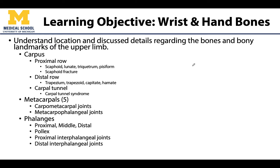We will start with the carpus or the carpal bones, associated with the wrist — we're going to have eight bones there. We will then move to the metacarpals and finish with the phalanges, the distal-most bones of the upper limb. I will have separate videos for the larger joints of the upper limb, but I will talk about the joints of the hand here, since there are fewer ligaments to consider.